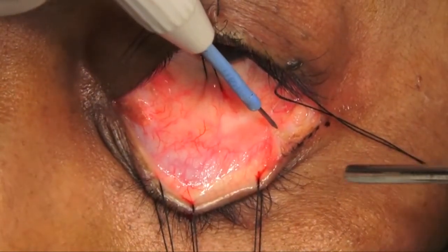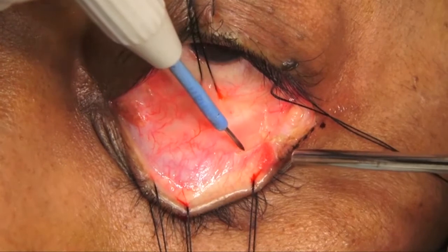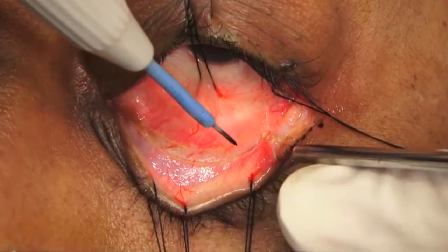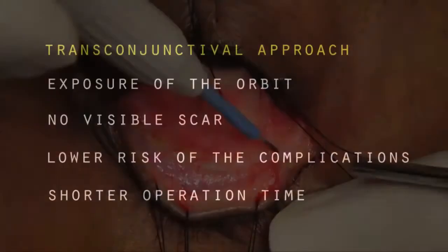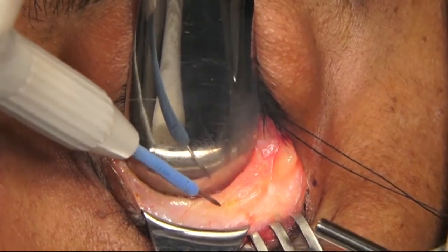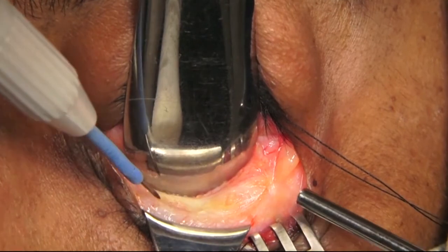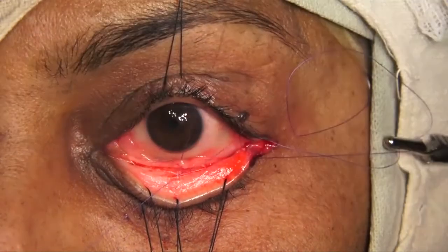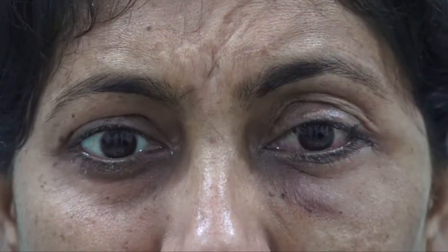In general, the transconjunctival approach to the orbit has been underutilised because of concern regarding inadequate exposure and postoperative complications such as lower eyelid shortening and ectropion. However, with current imaging modalities allowing proper case selection, this approach offers several advantages compared to conventional methods. Lower eyelid complications can be avoided by limiting dissection to the suborbicularis plane at the time of exposure and careful repositioning and suturing of the tissues at closure. Our patient did well postoperatively with excellent cosmesis and no complications, and she was ready to go back to her job in a week.